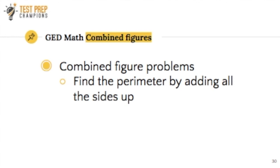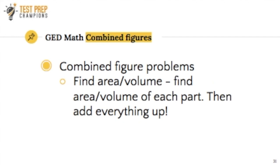You also need to know how to solve problems with combined figures. What I mean by combined figures is they'll take different shapes like rectangles and triangles, and they'll put them together. There are basically two different strategies. You may be asked to find the perimeter, and all you do is take the combined figure and just add up all the sides. You may also be given a combined figure problem where you have to find the area or the volume. What you need to do is look at all of the individual parts, find the area or volume for each of those parts, and then add those all up.